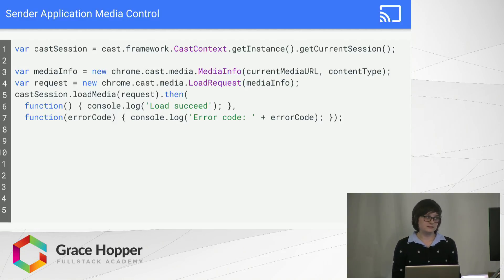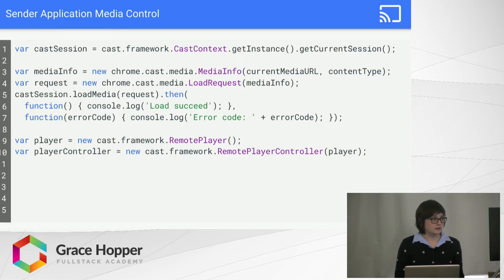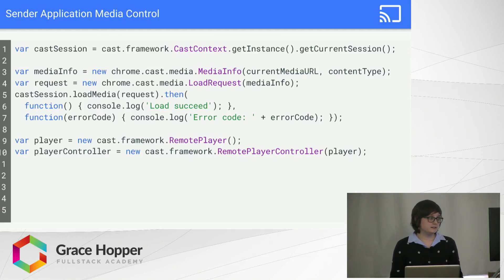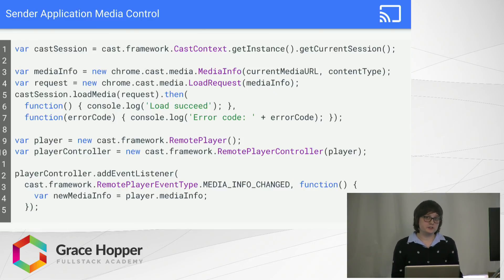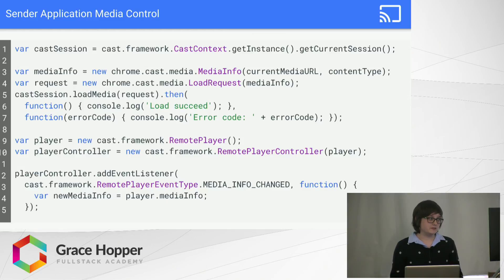If the load succeeds, you can confirm it worked. So then you have the media, but now you need to actually be able to control it. You create a new remote player instance, and then with that you create the controller for the remote player instance, which allows you to play, pause, fast-forward, and so on. With that player controller you can also add custom event listeners. For example, this one is saying that if the receiver device sends a message back that something about the media info has changed, you can grab that media info off of your player instance, save it as a variable, and do whatever you want with it.